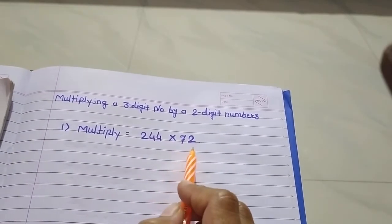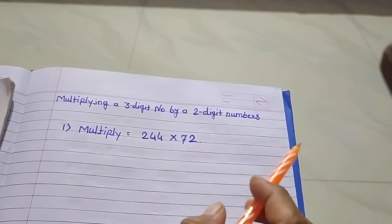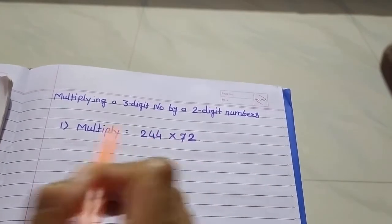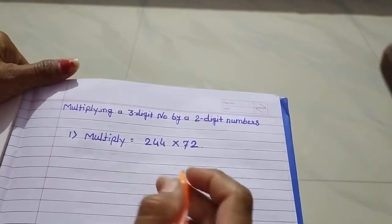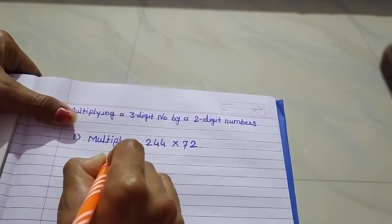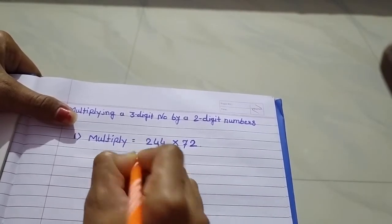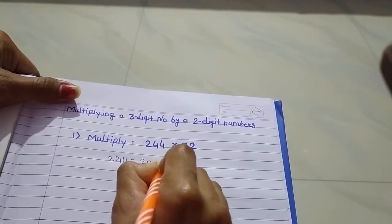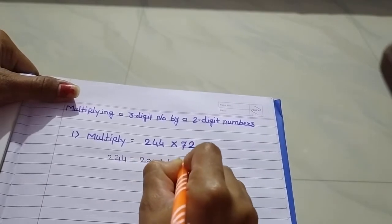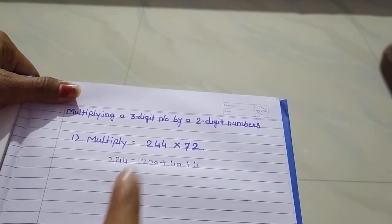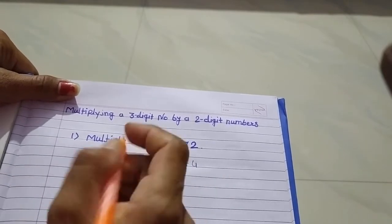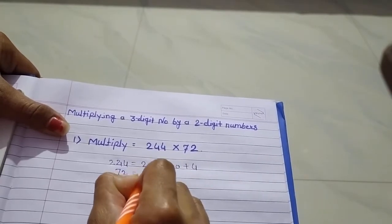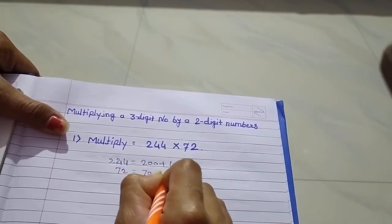Agar yahan pe single digit rehti hai, to uska expanded form likhne ki zaroorat nahi hai. But yahan pe do digit ya teen digit number hai, ya four digit number hai, toh pehle unka expanded form likh lo. So sabse pehle hum two hundred and forty-four ka expanded form likhenge: two hundred plus forty plus four. Then 72 ka expanded form likhna hai — seventy plus two.